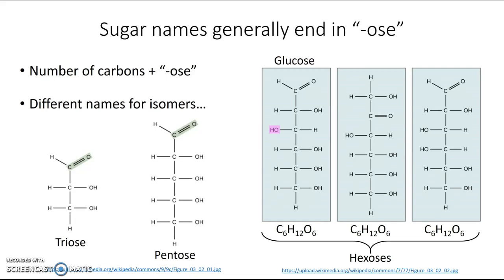This first hexose is called glucose, which you've probably heard of. The second is called fructose, and the last is called galactose. These three are starred because you need to memorize them — their names and their formulas, since you can't determine the exact formula from the name alone.